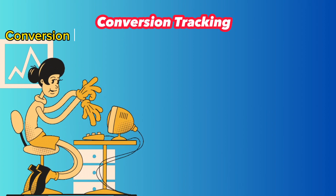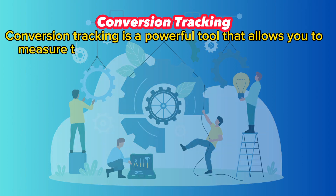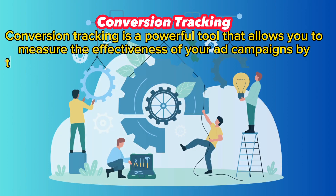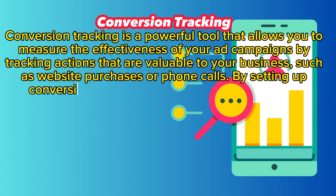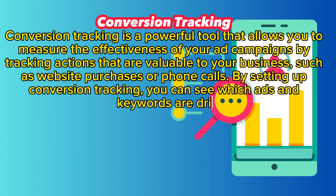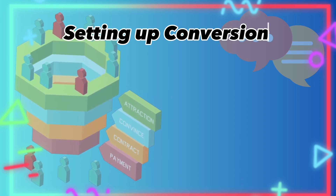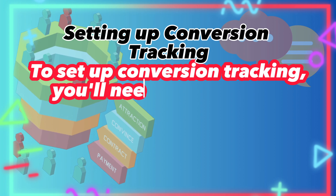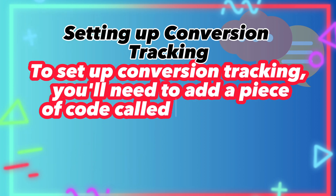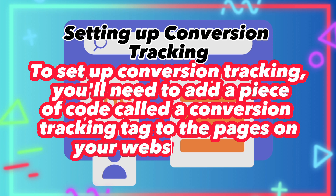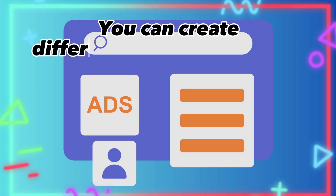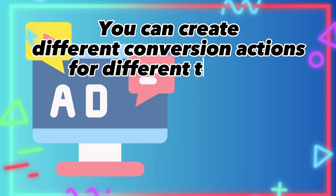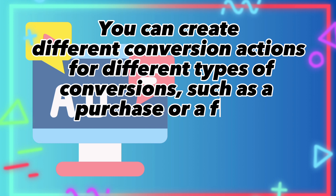Conversion tracking. Conversion tracking is a powerful tool that allows you to measure the effectiveness of your ad campaigns by tracking actions that are valuable to your business, such as website purchases or phone calls. To set up conversion tracking, you'll need to add a piece of code called a conversion tracking tag to the pages on your website where conversions happen. You can create different conversion actions for different types of conversions, such as a purchase or a form submission, and track them separately in your account.